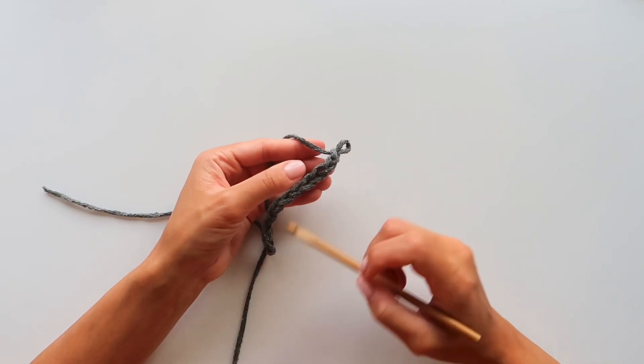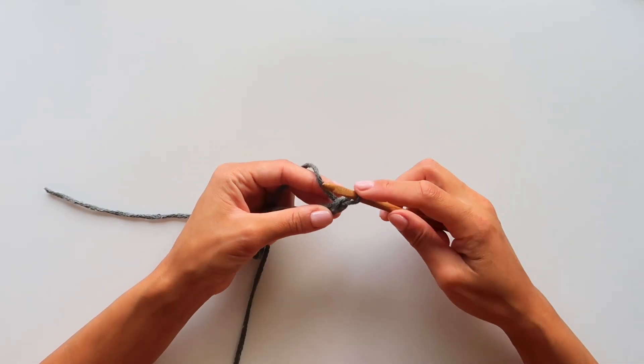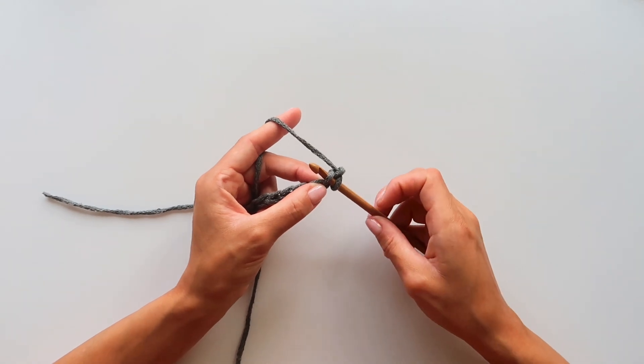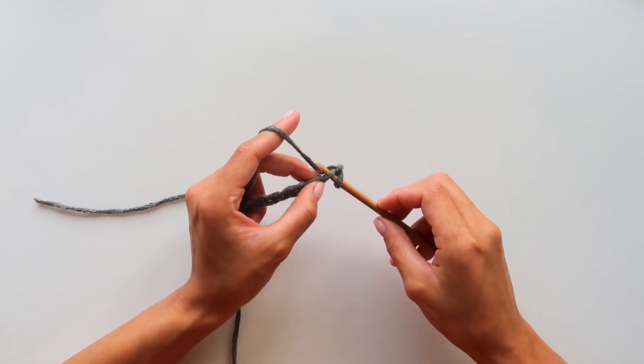So let's go ahead and put our hook in the first loop. And then you grab the yarn and pull through.